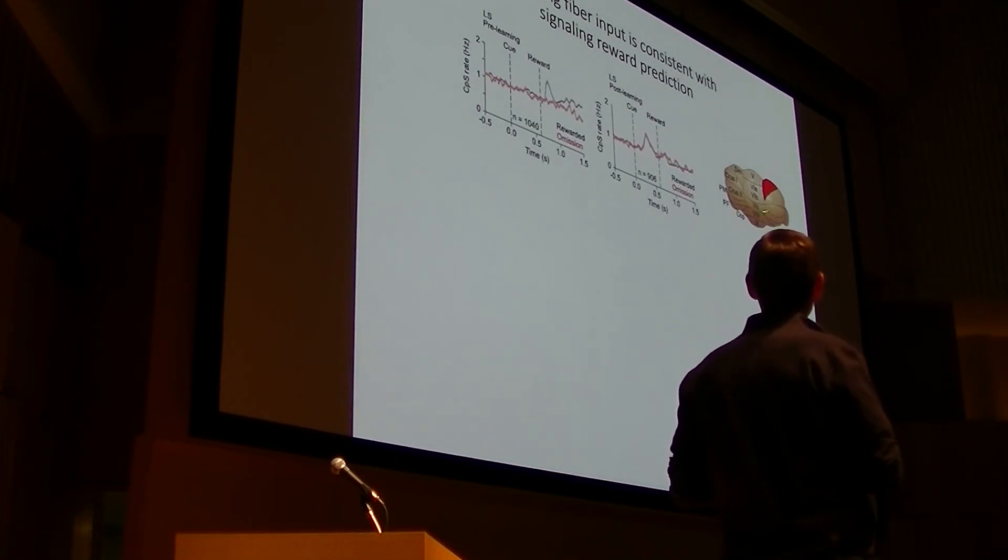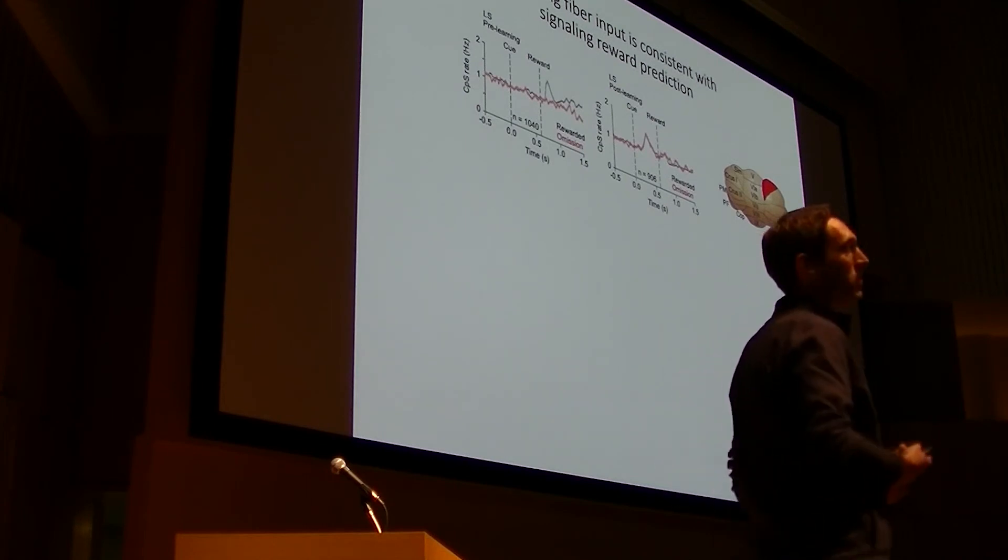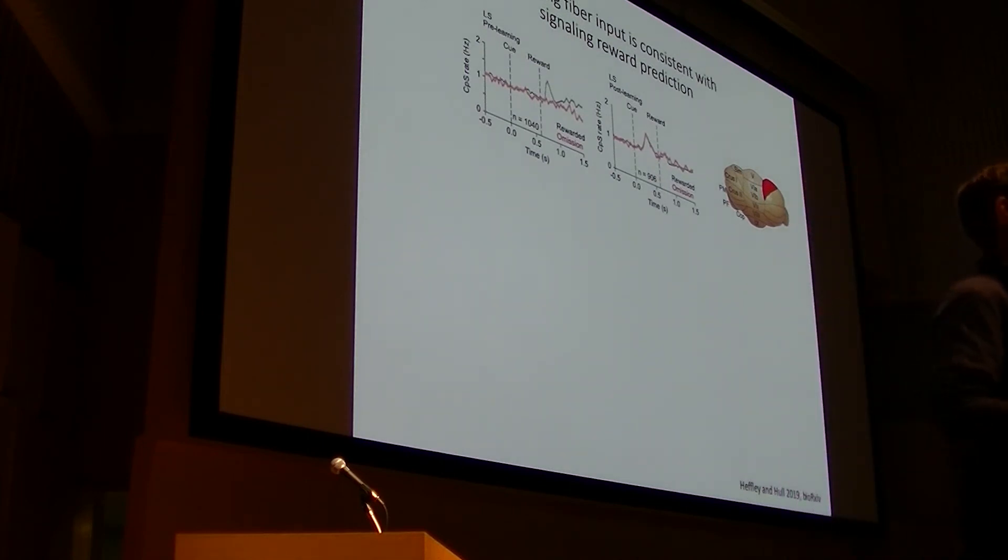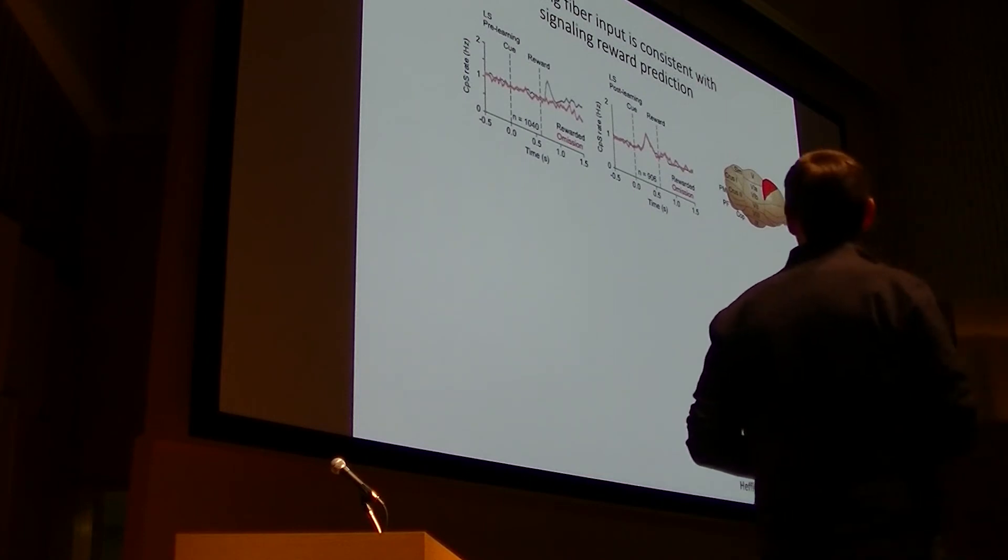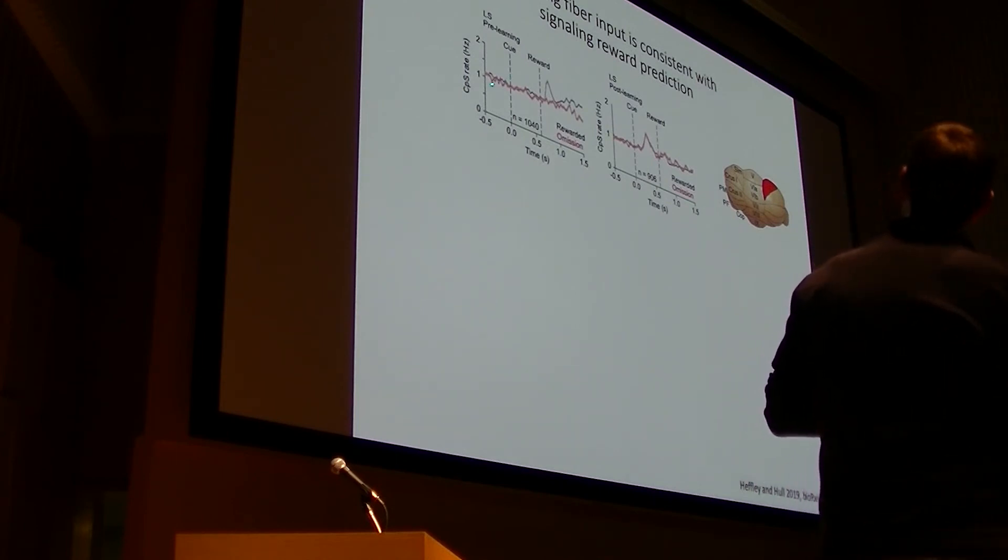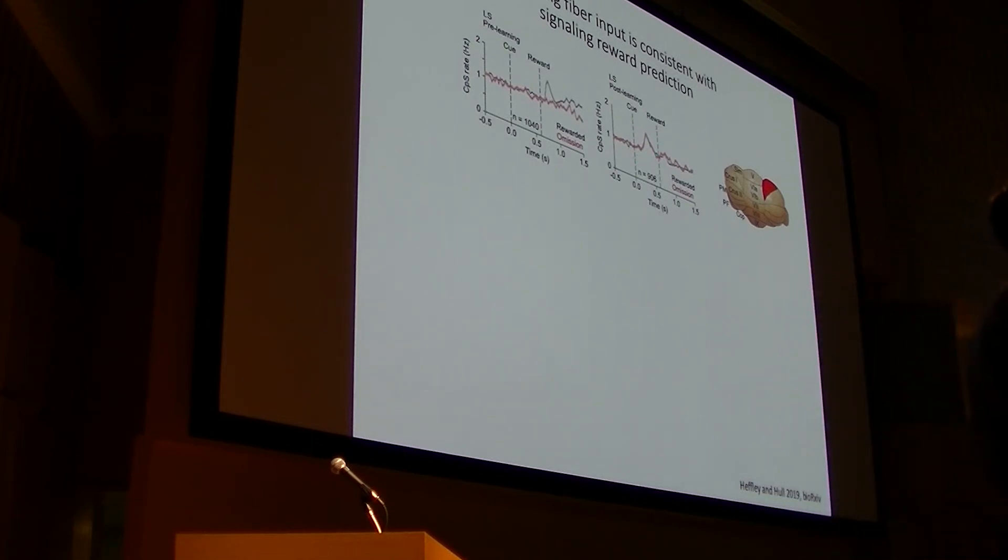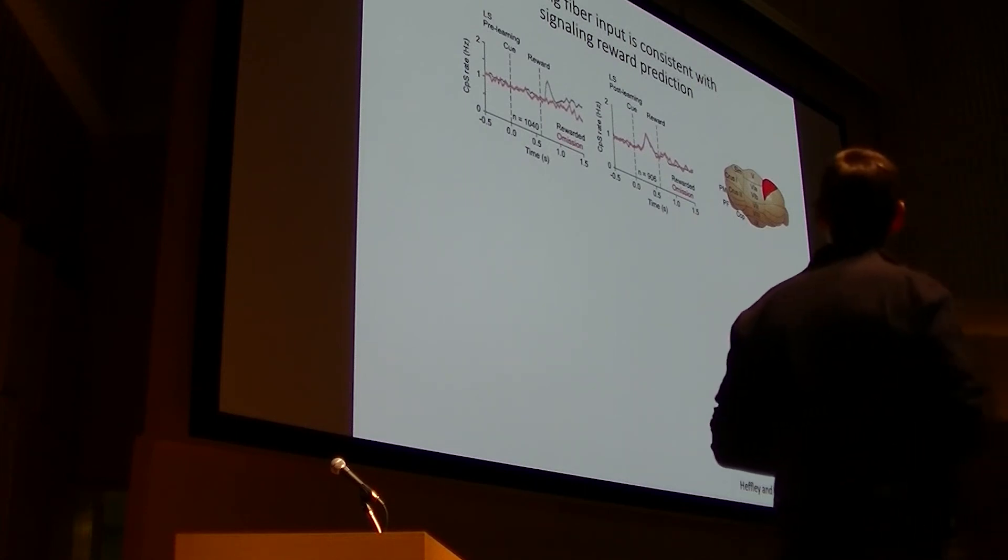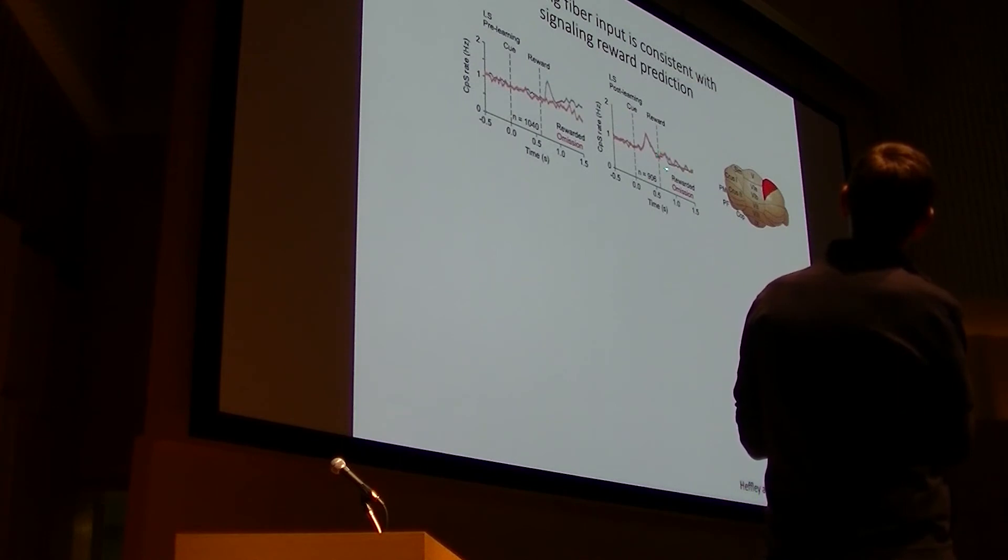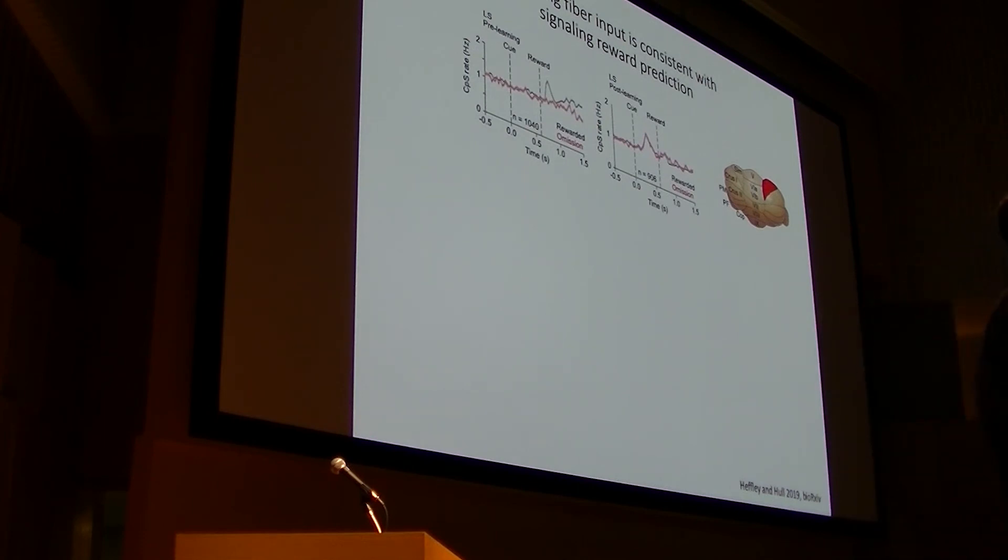So now we're going to look at climbing fiber activity in the context of this task. And we're back in lobule simplex, where I showed you data previously. Again, this is two-photon calcium imaging. And for simplicity, I changed everything into spike rates. The left column is going to be naive animals, and the right column is going to be the same population of animals after having been trained on the task. What you note is that in the naive animals, there's this robust response to unexpected reward on the first day of training with nothing on the omission trials. And remarkably, after training, you now see a response that is in fact driven by the visual cue that predicts reward even on reward omission trials. And we've disambiguated this as well from licking responses.